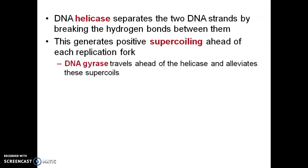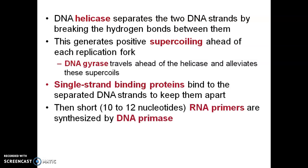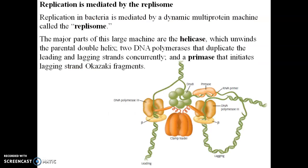DNA gyrase moves ahead of the helicase and alleviates the supercoils. Then single-stranded binding proteins bind, and then DNA primase comes to add short RNA primers to the exposed single-stranded regions — on both the lagging strand and the leading strand. You need to be familiar with two terms: replisome and primosome. The whole protein complex needed to start or initiate replication is known as the primosome. The replisome consists of the two replication forks, one moving in the forward direction and one in the backward direction — a multi-enzyme complex.